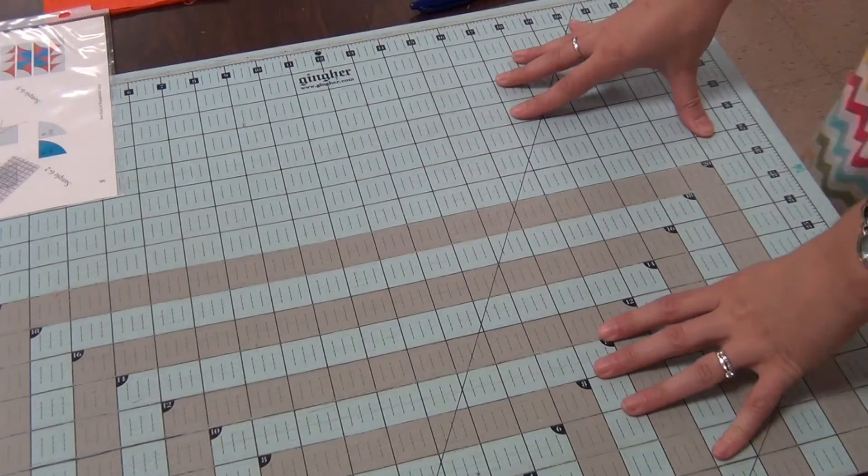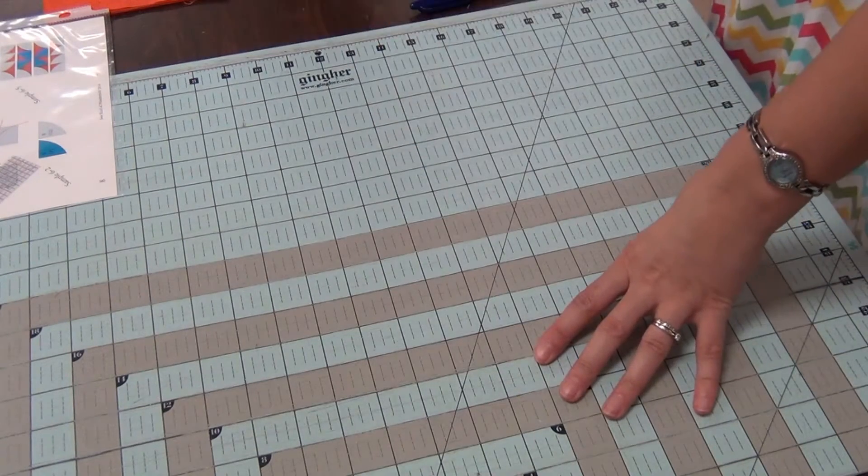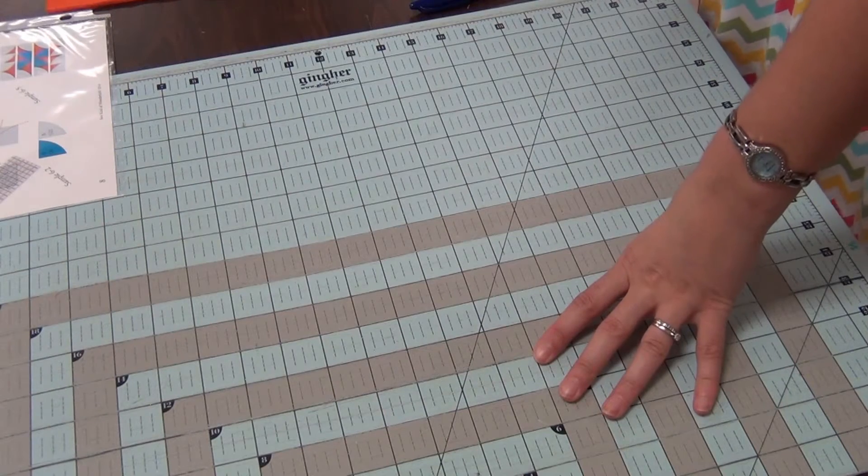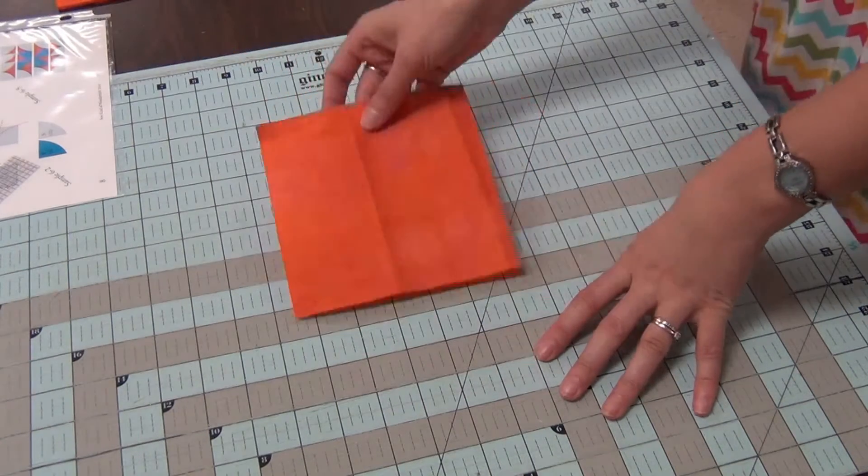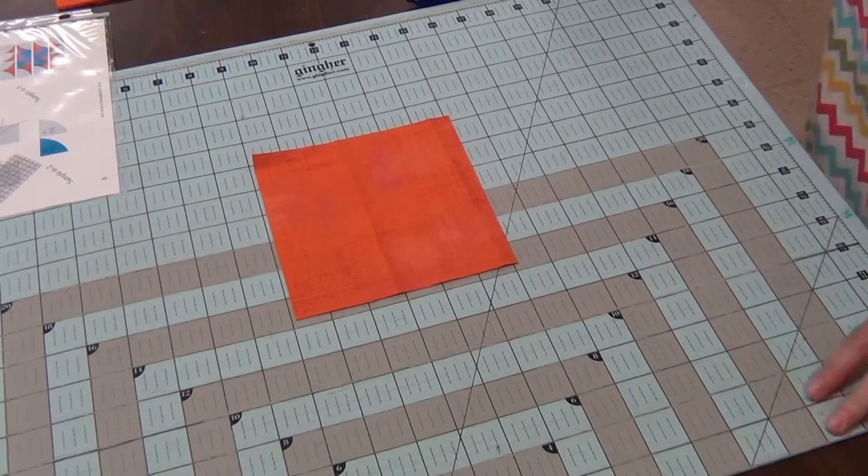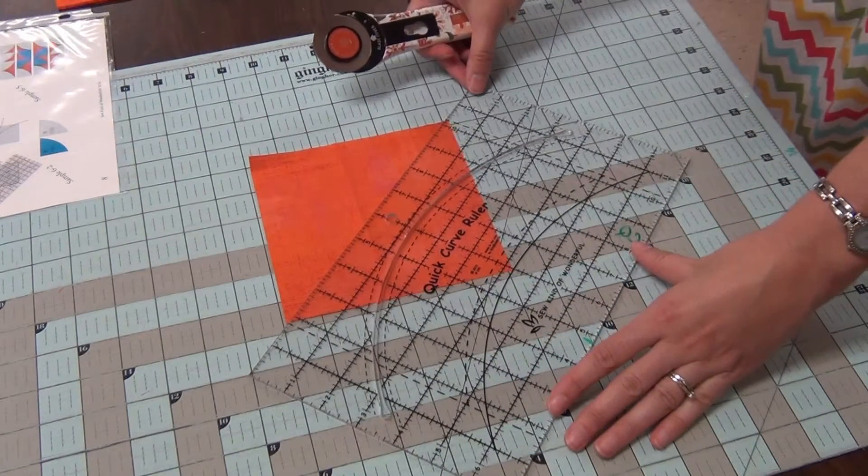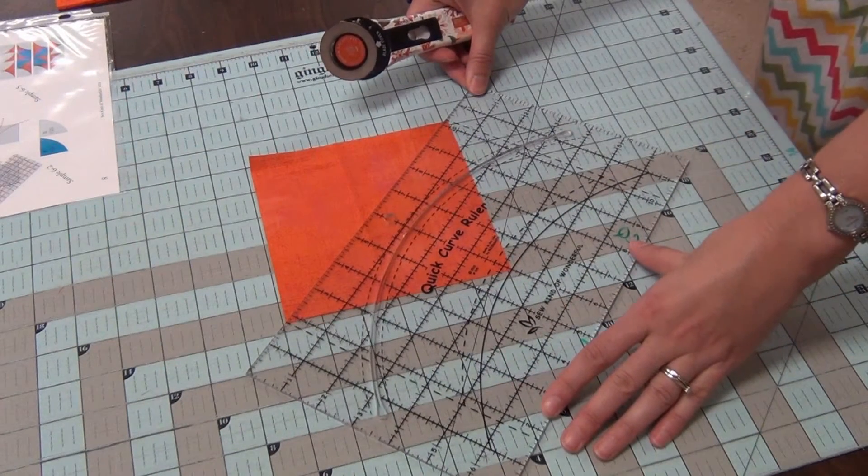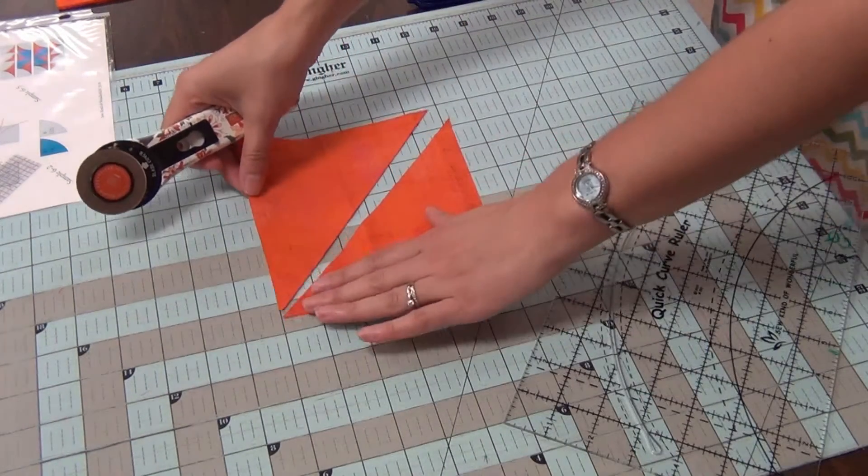Today we're going to be sewing and cutting and completing our block six, which is the Curvy Geese block, and it features half square triangles. The first thing you're going to do for your half square triangles is you're going to cut these squares from corner to corner to create a triangle. It's half a square.